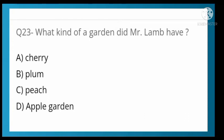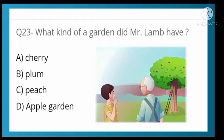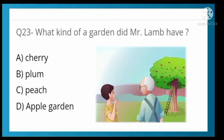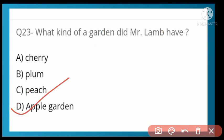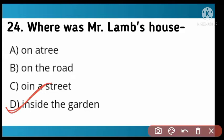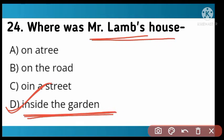What kind of garden did Mr. Lamb keep? Options: cherry, plum, peach, or apple garden. Option D is correct — he had an apple garden. Where was Mr. Lamb's house? On the road, on a street, or inside the garden. Option D is correct — inside the garden.